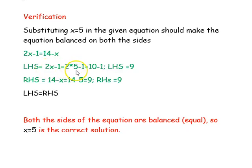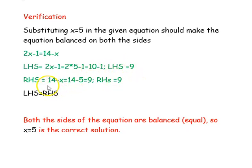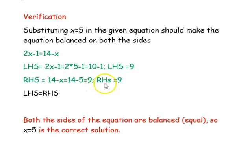So, 2 into 5 minus 1. 2 into 5 is 10, and 10 minus 1 is 9. Now substituting in the right hand side: 14 minus x is 14 minus 5, which is 9. So the right hand side is also 9.